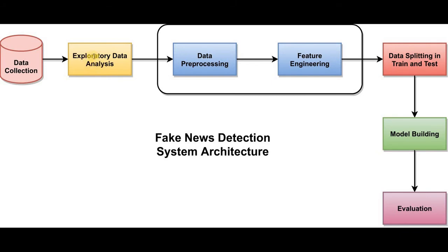Then comes the step of EDA, or exploratory data analysis. EDA refers to a critical process of performing initial investigations on data so as to discover patterns, spot anomalies or abnormalities in the data, test our hypothesis, and check assumptions with the help of summary statistics and graphical representations. In this step, we will thoroughly understand whether the number of characters or number of words in the news article is important, and what the distribution of characters and words looks like with respect to zeros and ones — where zero represents reliable news and one represents fake news.